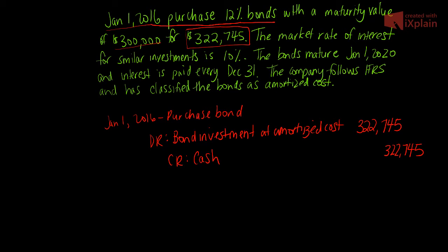There are no fair market value adjustments for bonds under the amortized cost model, so the next thing we need to do is look at when our interest payment is going to occur. Before we can record the coupon payment for December 31st, 2016, we need to think about the amortization of the premium or discount. The first thing we need to do is create an effective interest amortization schedule. Our schedule will have: date, cash received, interest revenue, the difference, and the carrying value of the bond.